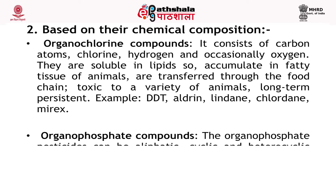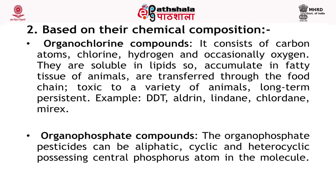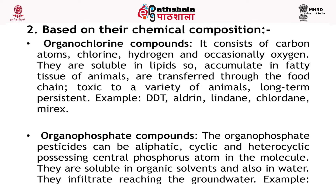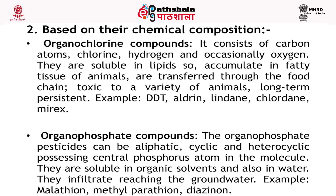Another class is organophosphate compounds. The organophosphate pesticides can be aliphatic, cyclic and heterocyclic, possessing a central phosphorus atom in the molecule. They are soluble in organic solvent and also in water. They infiltrate reaching the ground water, but are less persistent than chlorinated hydrocarbons. They are absorbed by plants, transferred to leaves and stems which are then supplied to leaf-eating insects as feed. In insects, they affect the central nervous system. Examples are malathion, methylparathion and diazinon.